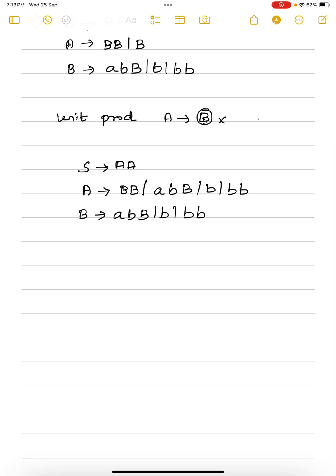Note that A goes to B where B is a terminal — that is not a problem, it is not a unit production. Unit production only applies when a non-terminal goes to a single non-terminal. So we have eliminated all unit productions in the given grammar, and this is our result after elimination of unit production.